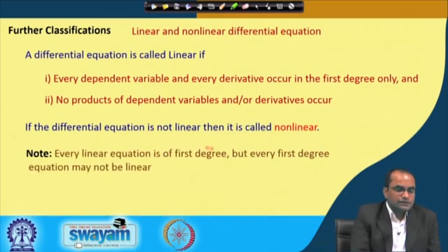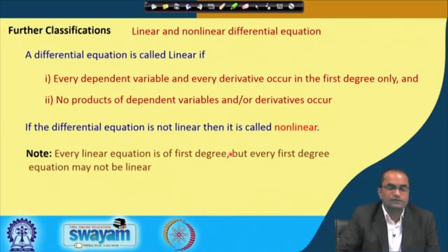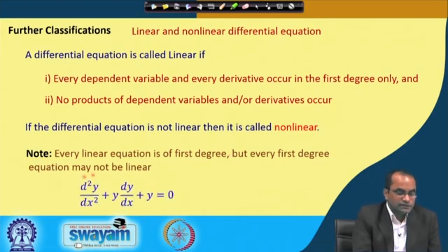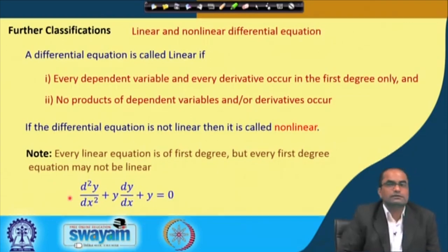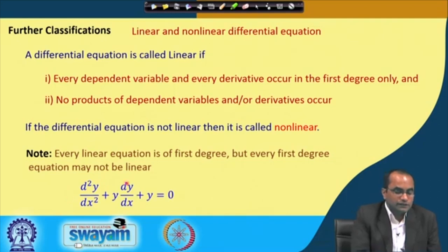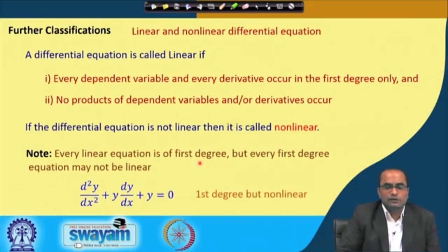Every linear equation is of first degree, because in a linear equation there is no product or power. But every first degree equation may not be linear. For instance, a second order equation of degree 1 can still be non-linear because of a product term like y times dy/dx. So every linear equation is of first degree, but not every first degree equation will be linear.